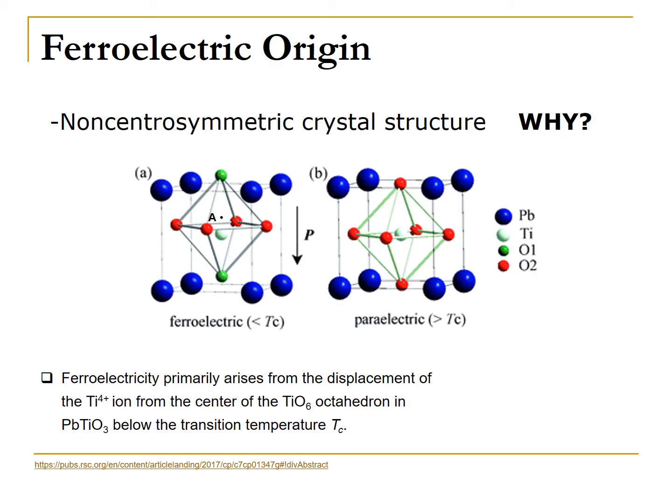A prototypical material whose molecular dipole moments do align and is ferroelectric is lead titanate. Lead titanate has a non-centrosymmetric crystal structure. This is because its ferroelectric properties arise from the displacement of the titanium atom from its oxygen octahedron center, as can be seen in figure A. The off-center titanium atom is positively charged, which results in a net dipole moment for the crystal cell oriented downward. Thanks to lead titanate's crystal structure, the crystal cell's dipoles are oriented in the same direction, which makes lead titanate ferroelectric.